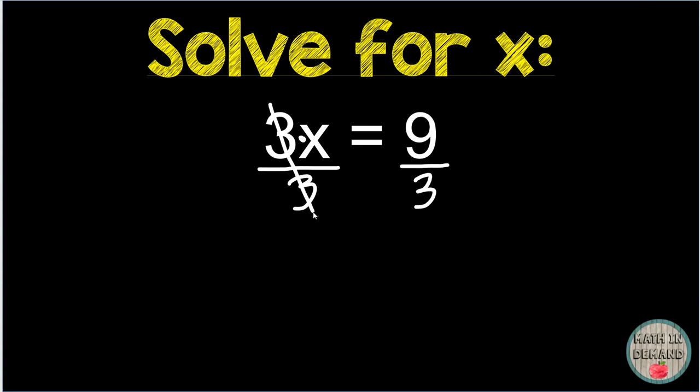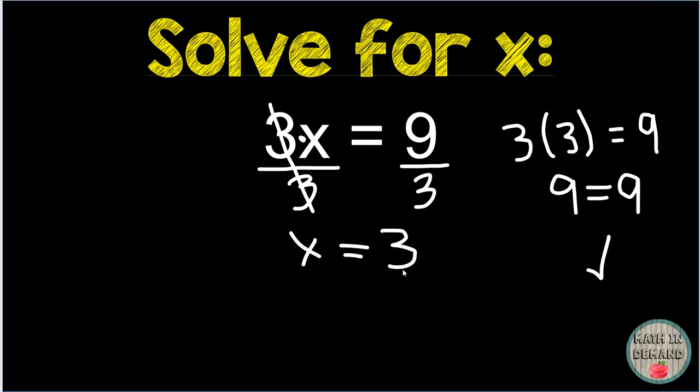3 divided by 3 we know is 1. So I am left with x equals 9 divided by 3 is 3. Again, I will check my work. x equals 3. So in the original equation, it was 3 times x. I am going to plug in 3 inside parentheses equals 9. 3 times 3 is 9. 9 equals 9 is a true statement. Therefore, my answer is correct.